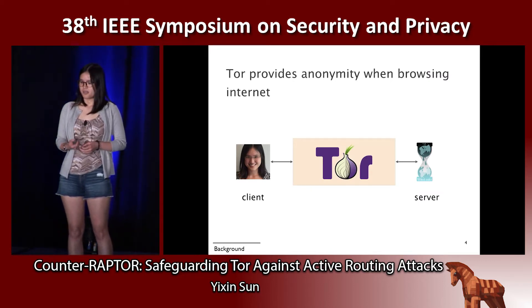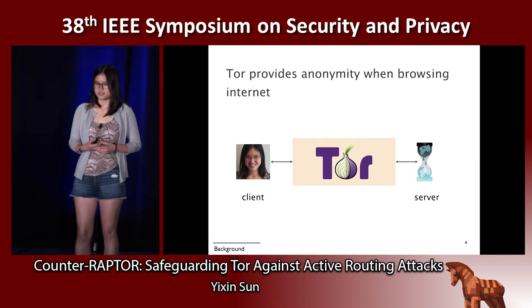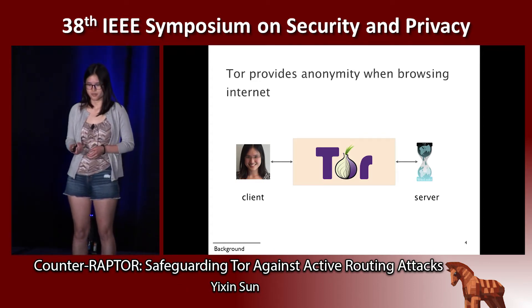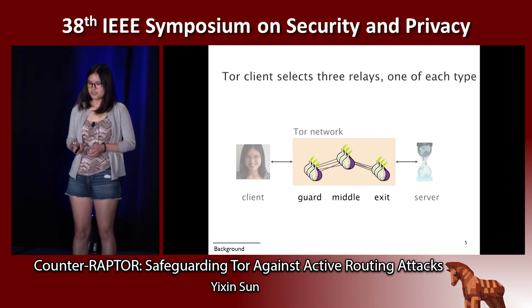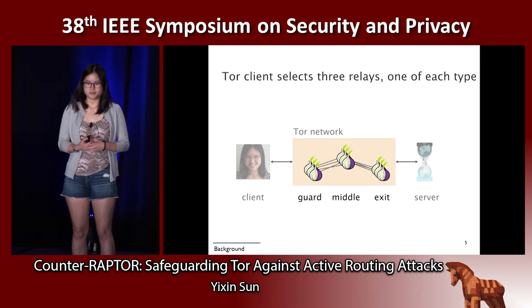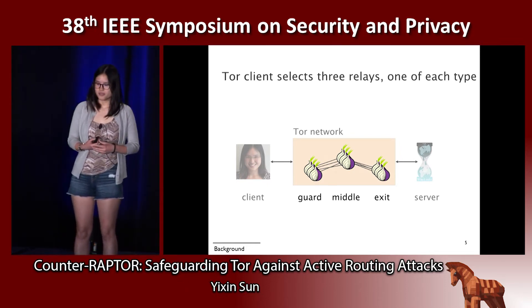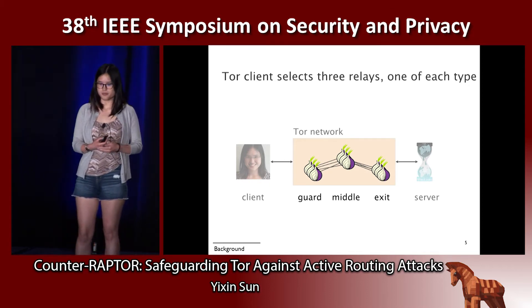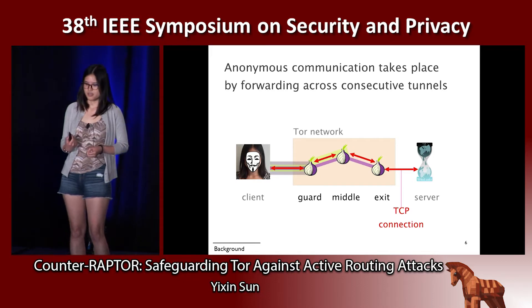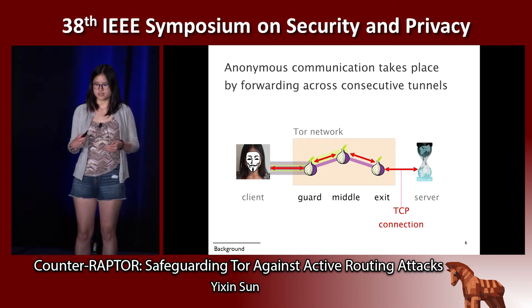To counteract this problem, anonymity systems such as Tor have been designed. Tor provides anonymity by hiding IP headers and prevents attackers from associating the source with the destination. Tor does that by relaying traffic on top of an overlay network composed of three types of relays. The Tor client selects three relays, one of each type, to build a Tor circuit. Anonymous communication takes place by forwarding traffic across these consecutive tunnels so that no single entity can know both the source and destination at the same time.